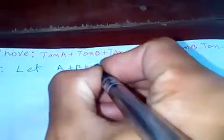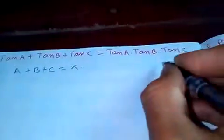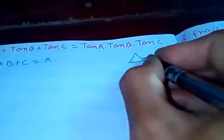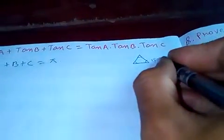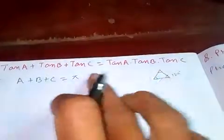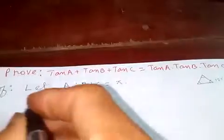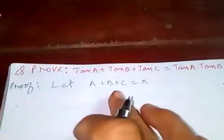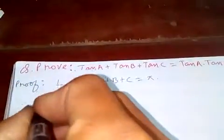We use the fact that A plus B plus C is equal to π, because in a triangle the sum of the angles is 180 degrees. We denote this in terms of π, and you can watch my other video on the proof of this formula.